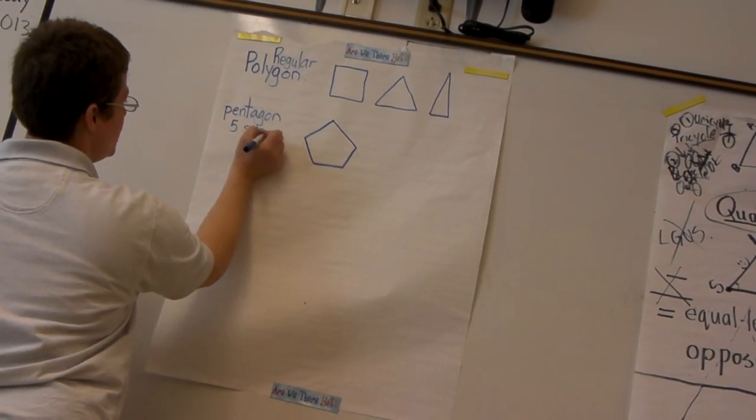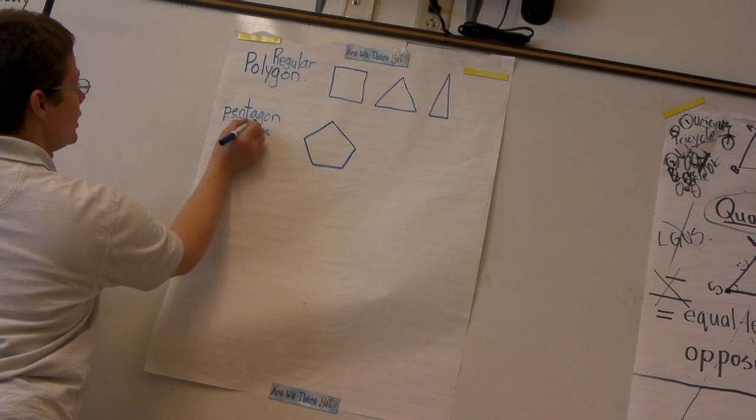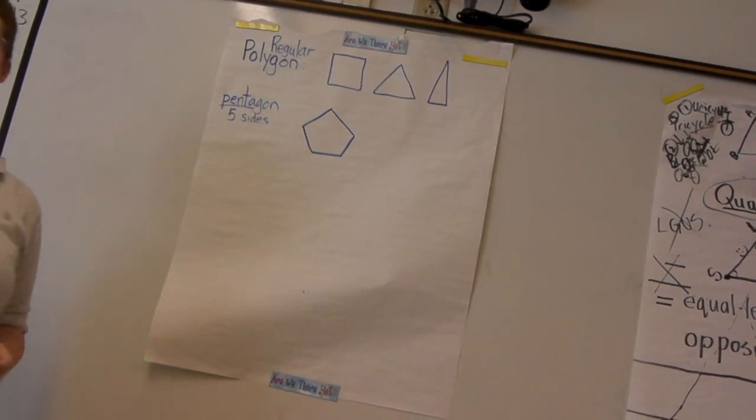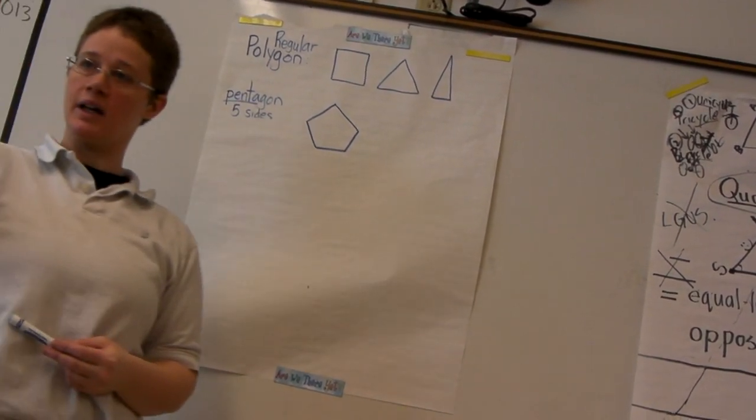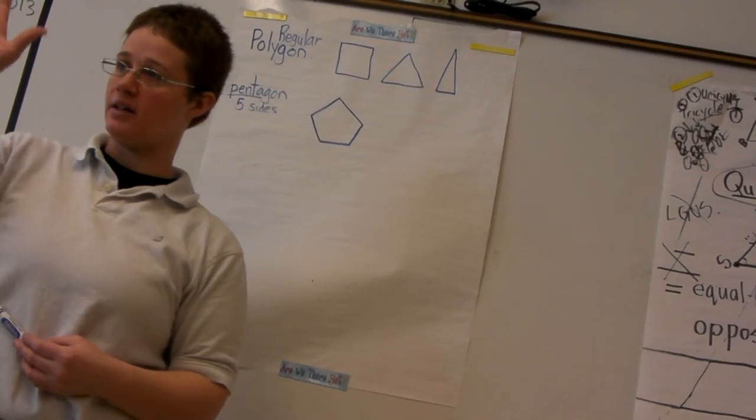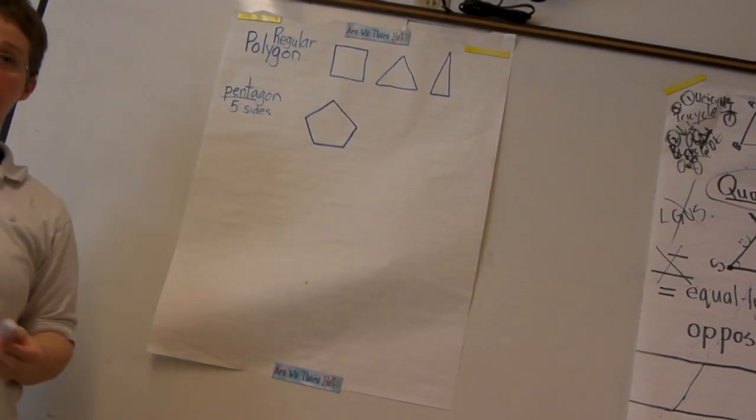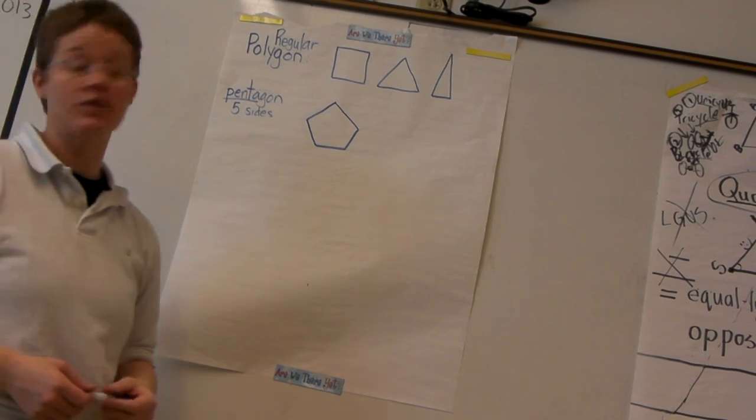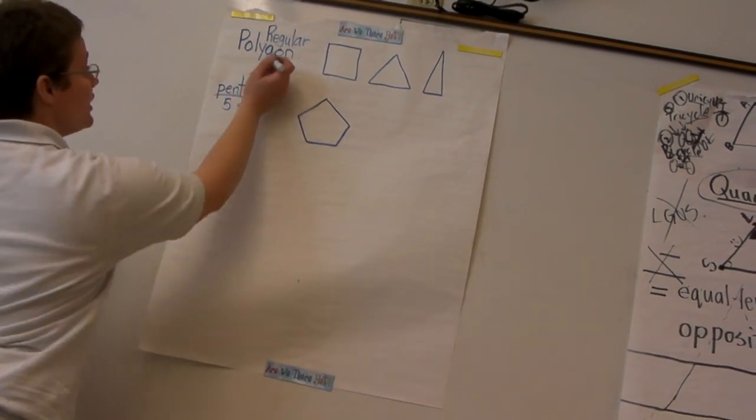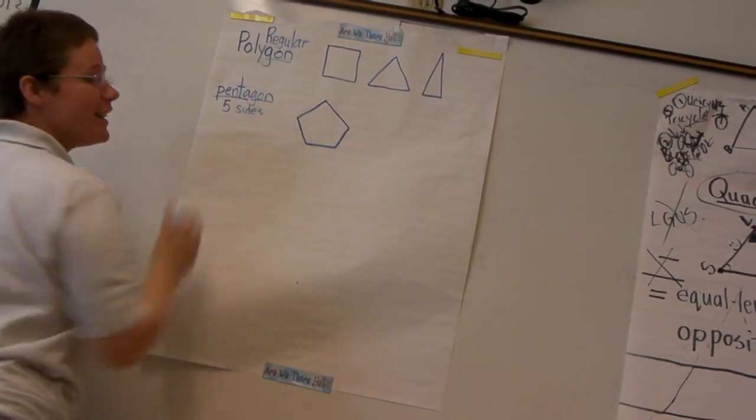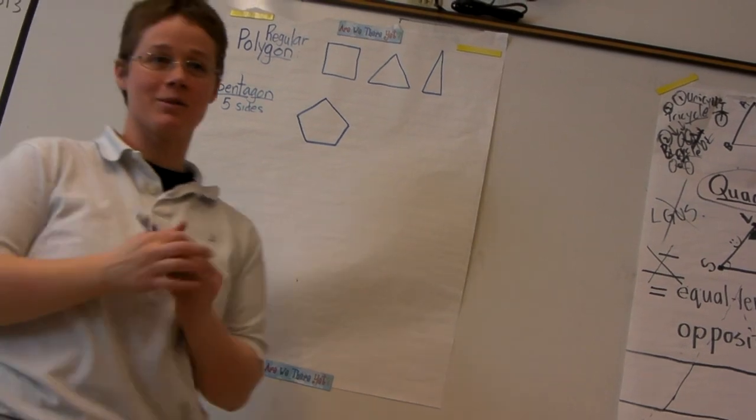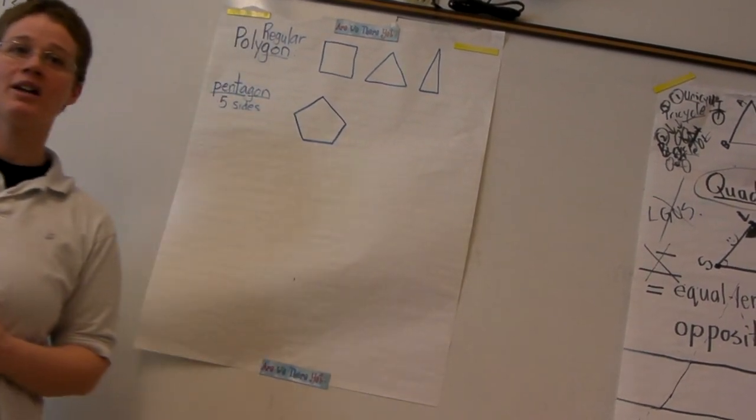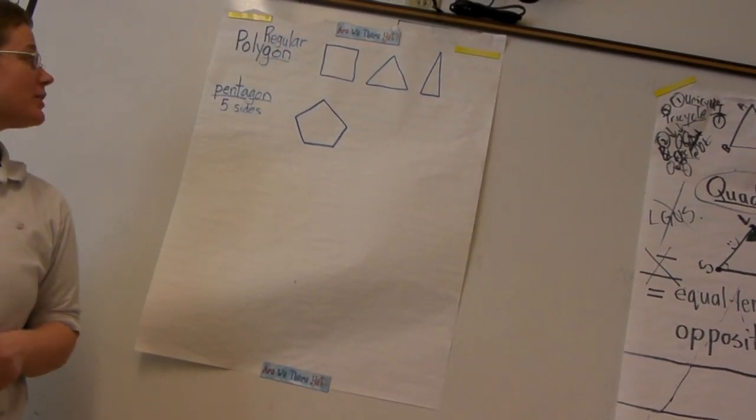And when you see penta, you know that means five. The beginning of that word, penta, is going to be five. And if you see gon, you might be noticing that's common in all of those. That's going to be some sort of the shape.